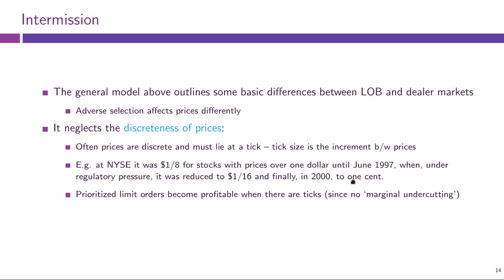One cent is actually still a quite sizable tick size. With discrete prices, the priority between different limit orders comes into play due to this discreteness — no marginal undercutting is allowed, so you cannot undercut your competitor's price by an infinitesimally small amount but must commit to a significant discount, such as one cent most recently.